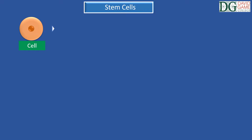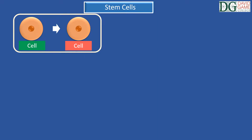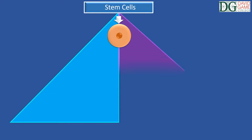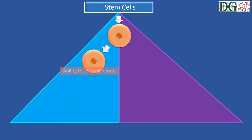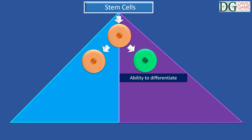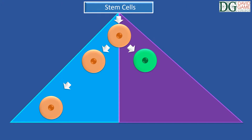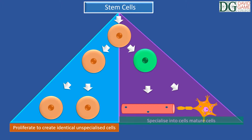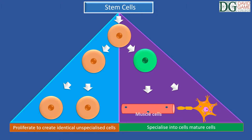All cells arise from pre-existing cells, which is the basis of cell theory and the fundamental tenet of biology. The name stem cells is given to cells that have two defining properties: the ability to self-renew and the ability to differentiate into other cell types. Essentially, stem cells have the ability of self-renewal by proliferating indefinitely through mitosis to create identical unspecialized cells, as well as giving rise to cells able of specializing into mature cells such as muscle cells or nerve cells.